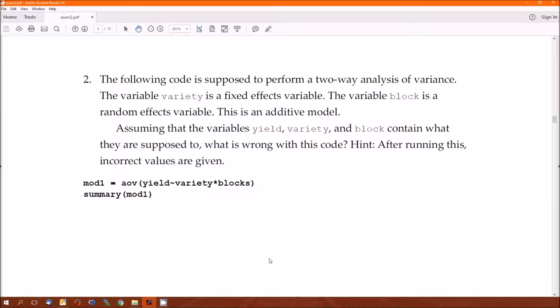Two: the following code is supposed to perform a two-way analysis of variance. Variable variety is fixed effects. Variable block is a random effects. It's an additive model. Oops. This is an interaction model because it's a star, a timesing. An additive model, you'd want to put a plus there. That's what was wrong. That's why you got incorrect values because it was fitting an interaction model as opposed to an additive model.